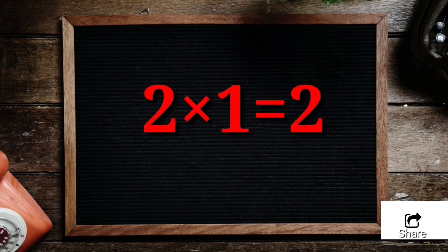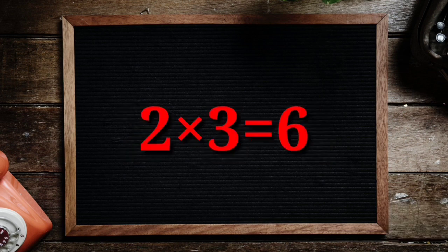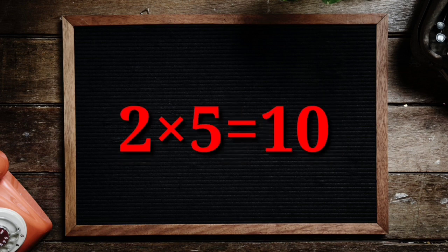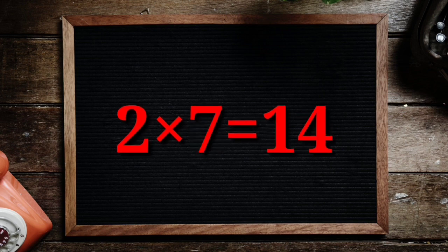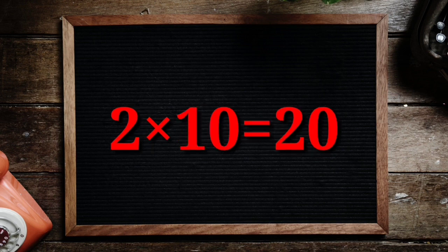2 1's are 2, 2 2's are 4, 2 3's are 6, 2 4's are 8, 2 5's are 10, 2 6's are 12, 2 7's are 14, 2 8's are 16, 2 9's are 18, 2 10's are 20.